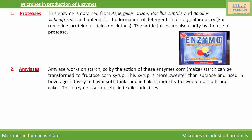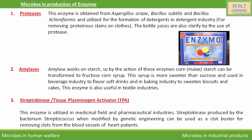The next enzyme is streptokinase, also called tissue plasminogen activator (TPA). This enzyme is utilized in the medicinal and pharmaceutical fields. Streptokinase is produced by the bacterium Streptococcus, and when modified by genetic engineering, can be used as a clot buster for removing clots from the blood vessels of heart patients. In this way, enzymes isolated from microbes are highly useful for industries.